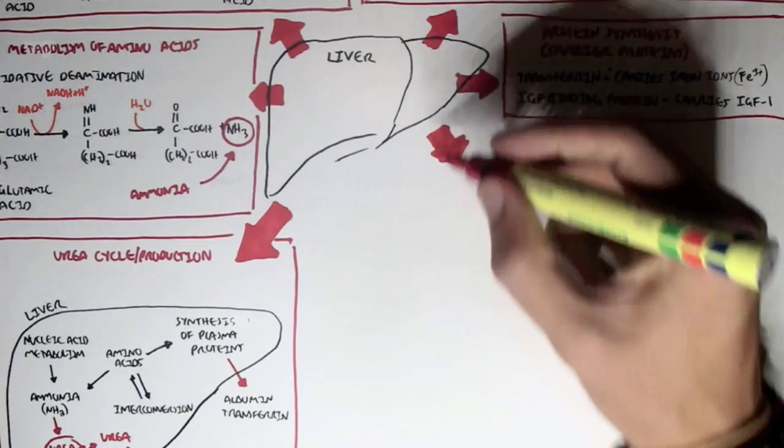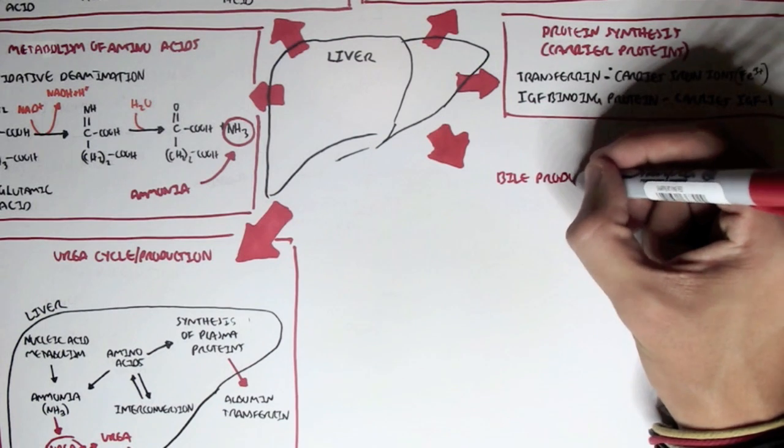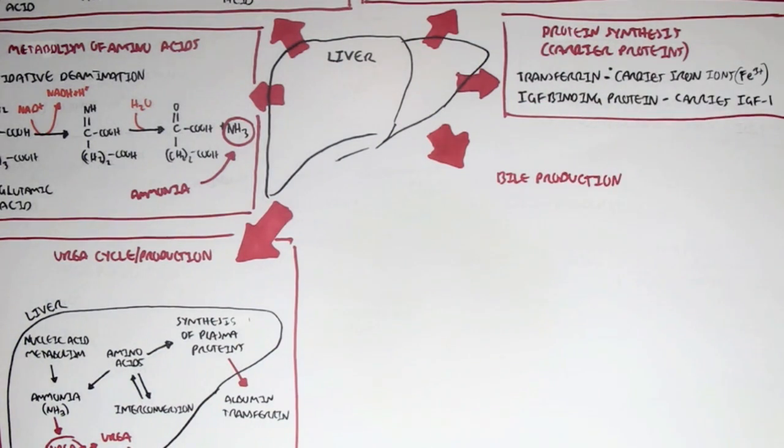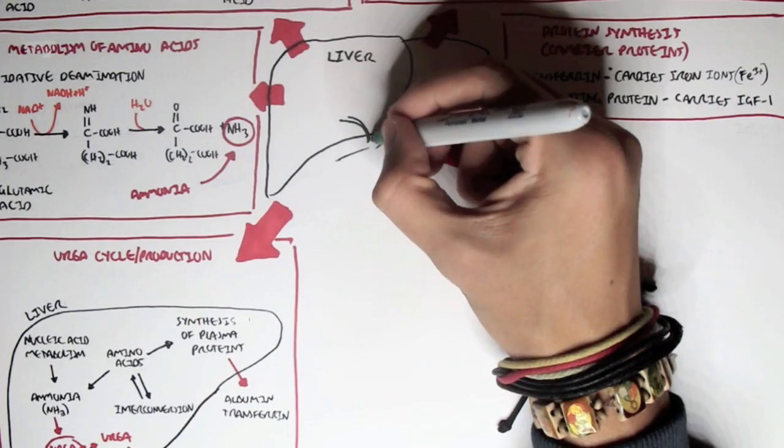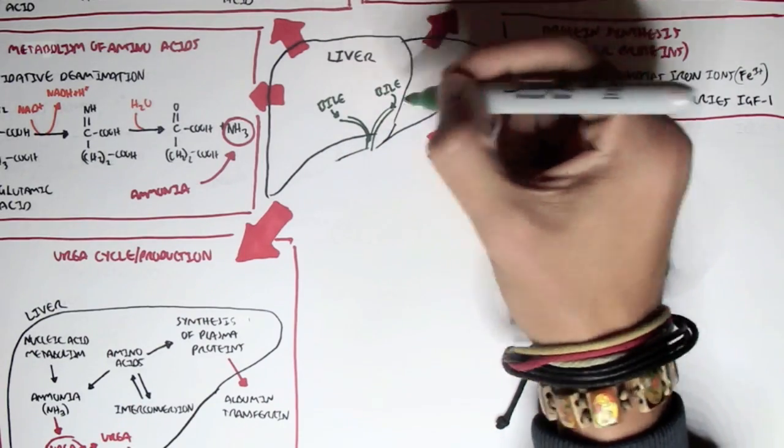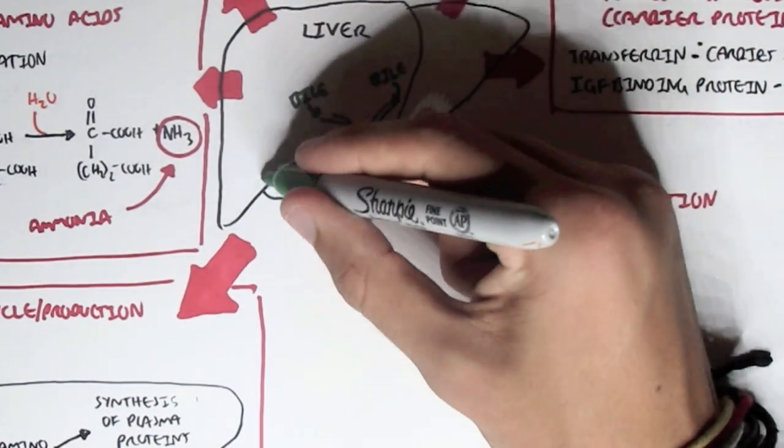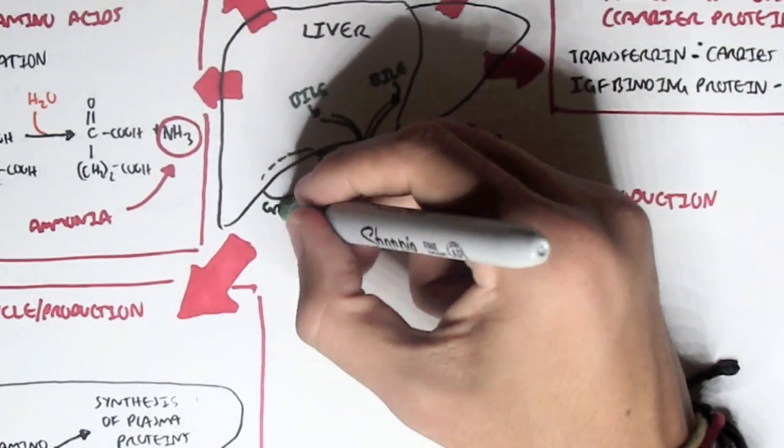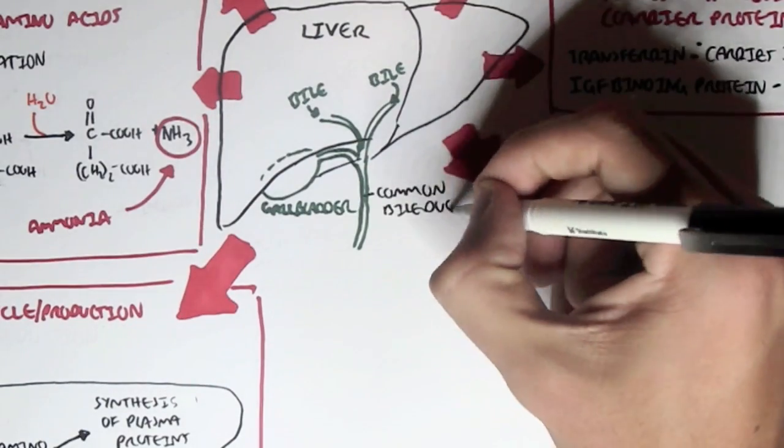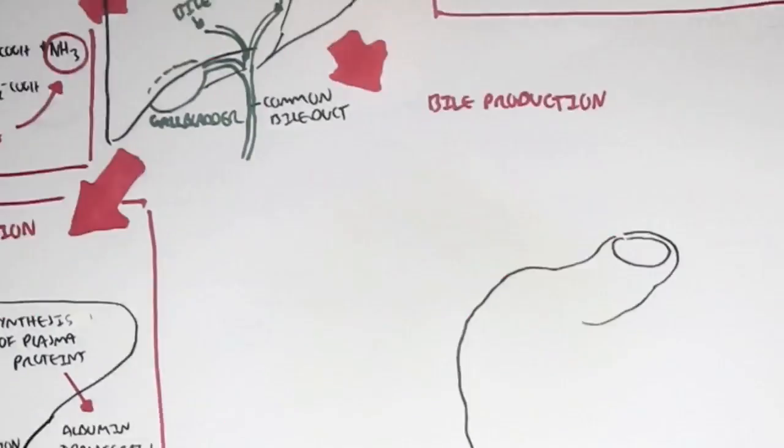One of the most important functions the liver has is the production of bile, so bile production. The liver actually produces bile and secretes the bile where it gets stored in the gallbladder. The gallbladder is right underneath the liver and we have a common bile duct where the gallbladder can secrete out the bile into the intestines to help digest fats.